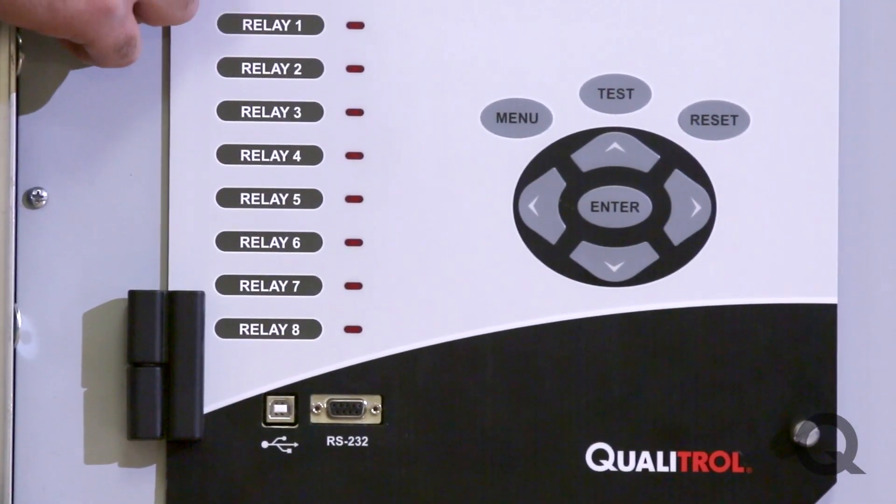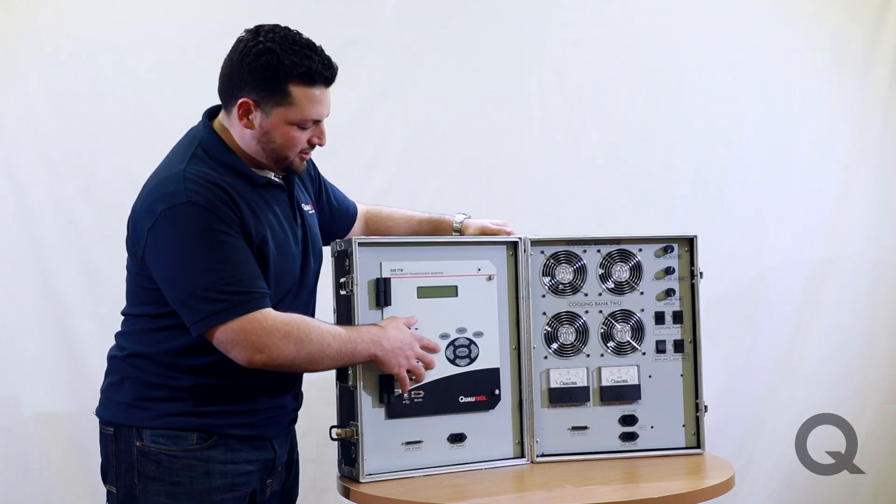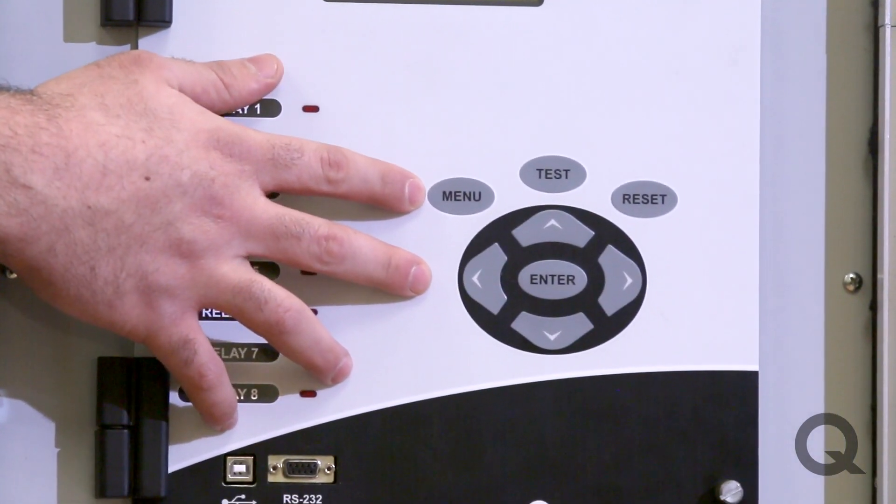Here you have the LCD which will display all of your current settings on the ITM as well as your values from the transformer. Here is a control panel that you can navigate the ITM itself.